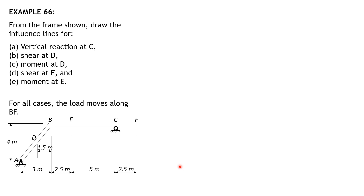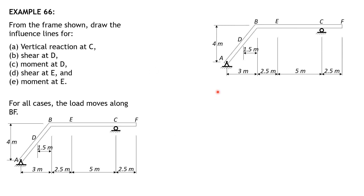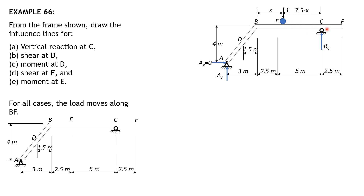First, let's have the free body diagram for the preparation of the construction of the influence line for reaction at C. So of course, we have R sub C, then we have AY and AX. AX is 0 definitely because there is no load that is inclined. So summation of forces in X equals 0, so AX is 0. So summation of moment about A equals 0. Let's call this distance X because the load moves from B to F. So this distance is 7.5 minus X.